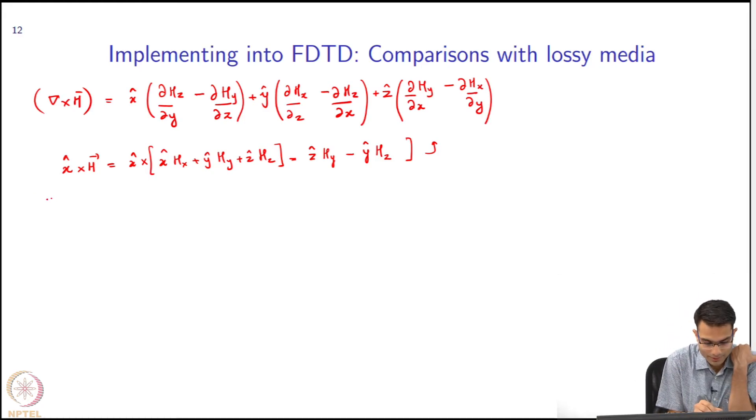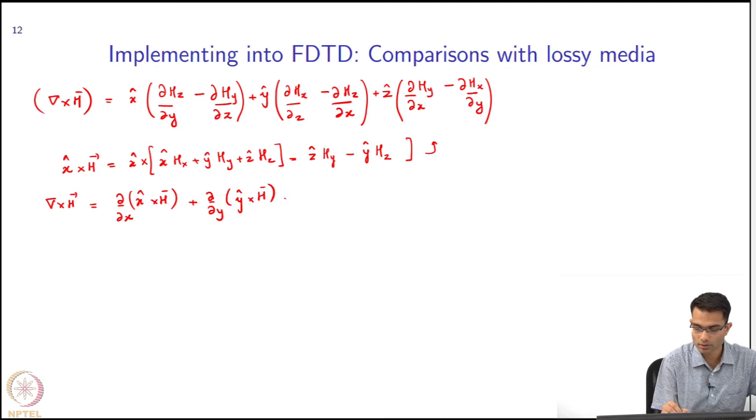So I can rewrite this: curl of H I can rewrite as d/dx (x hat cross H), then that takes care of the d/dx term. Then I will have d/dy (y hat cross H) plus d/dz (z hat cross H).